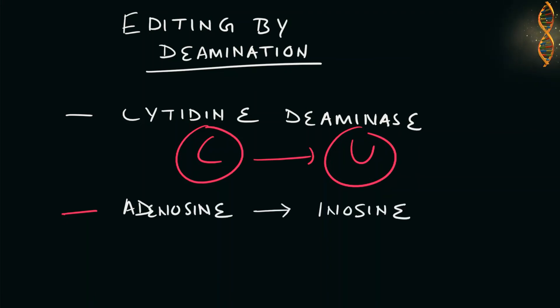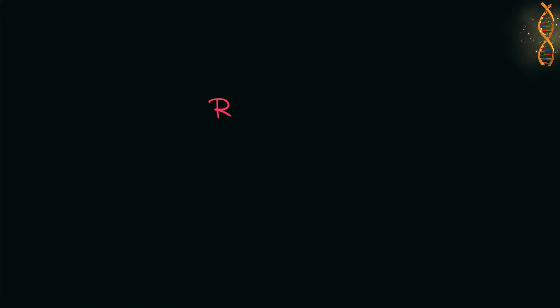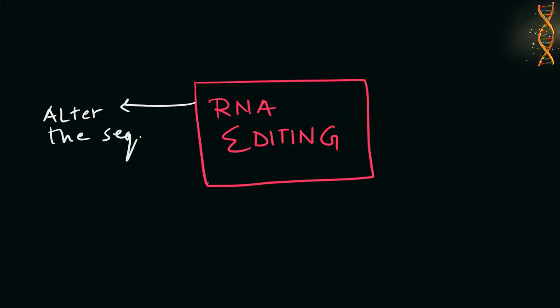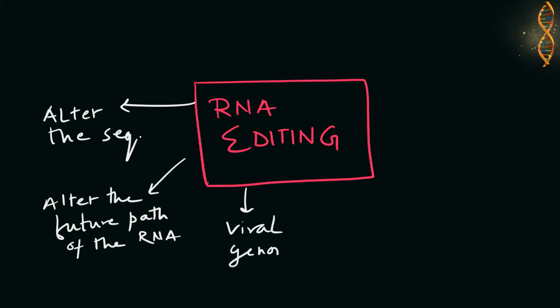Let's discuss the functions of RNA editing. RNA editing can alter the sequence, it can alter the future path of the RNA molecule, it may cause a viral genome mutation, and it may alter the secondary structure of the RNA molecule, causing a different protein binding site.